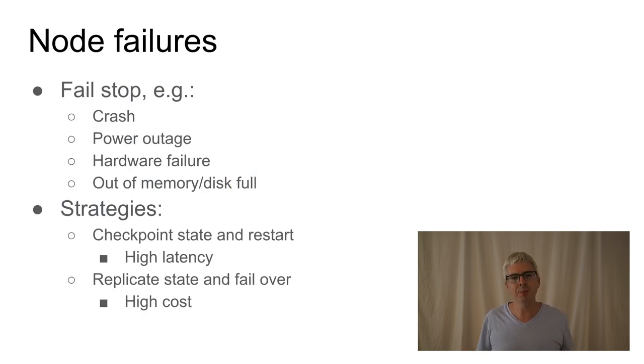The simplest failure that a node can have is it can just stop working. And you can write code that can deal with a node stopping working. So what do I mean by stopping? Your software, if you hit a bug and it crashes, that's a fail stop. If you have a power outage, that's a fail stop. If your hardware, if the motherboard cracks in half, your system will fail stop. If you run out of memory or your disk fills up and your operating system kills you off as a result, you fail stop.